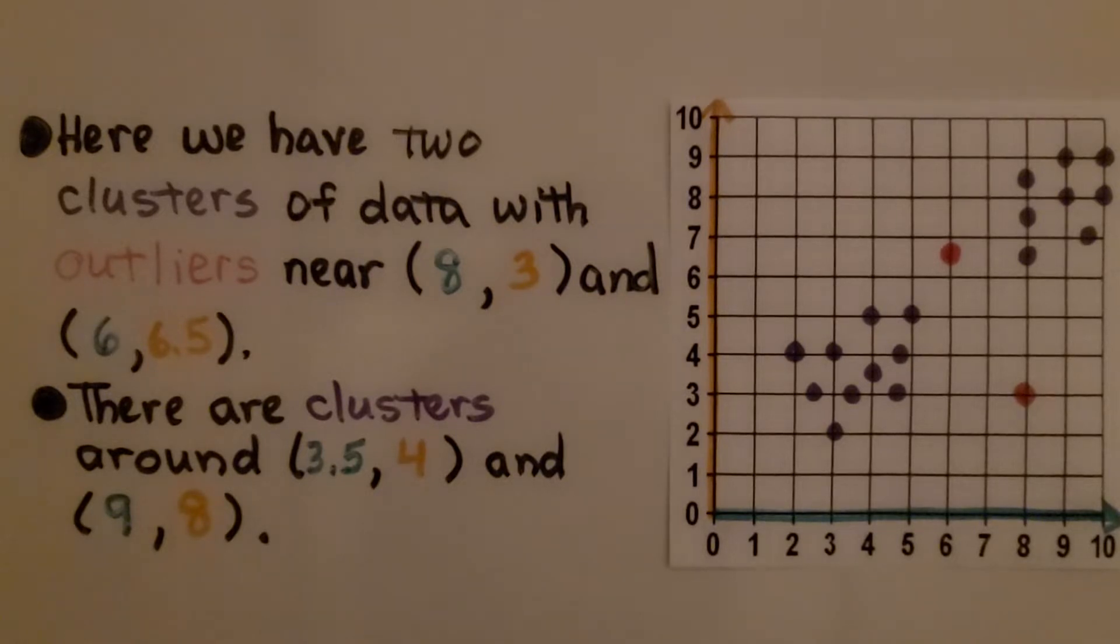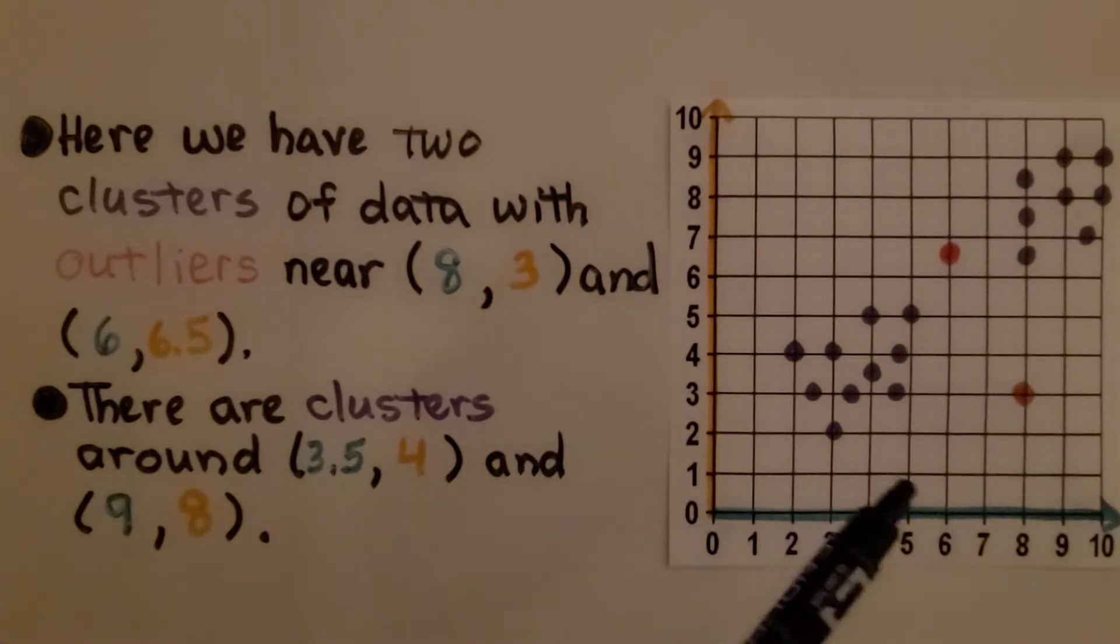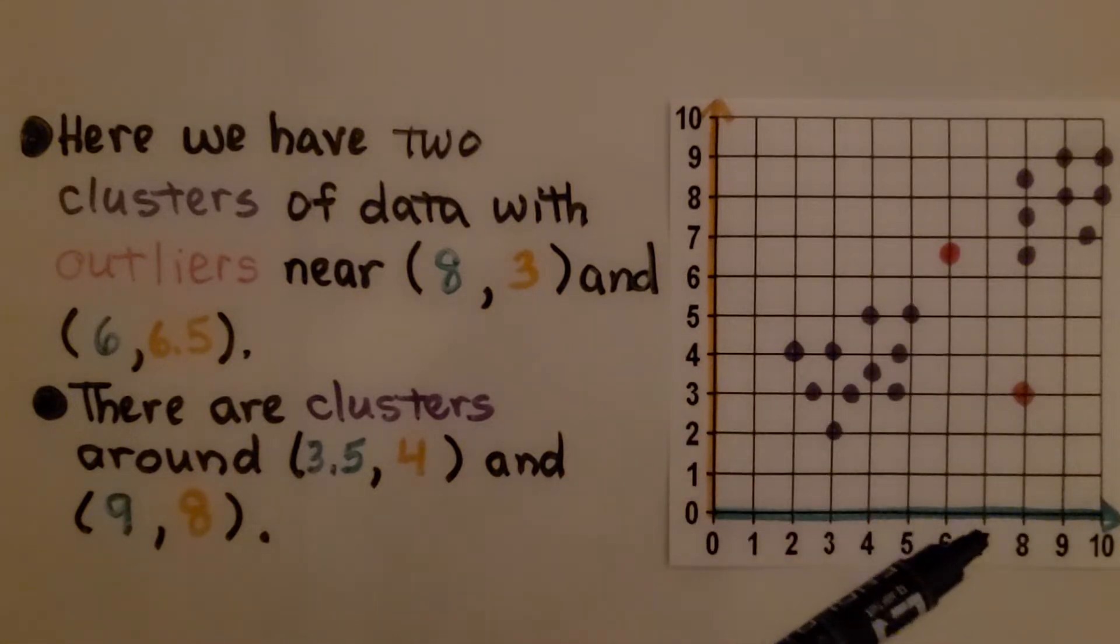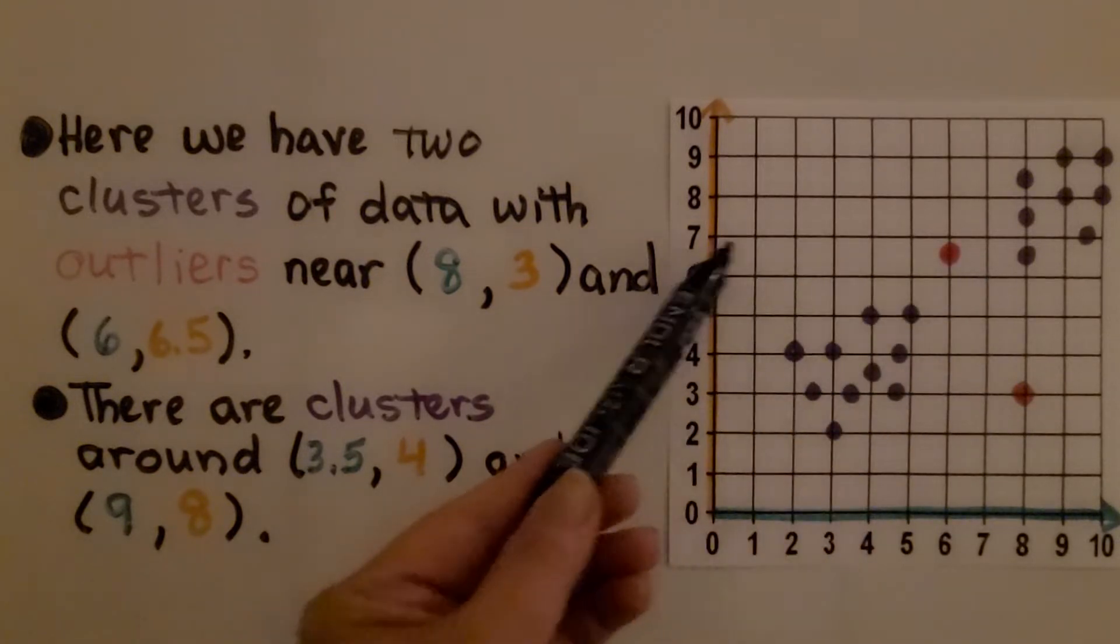Here we have two clusters of data with outliers, so there's more than one outlier. We have one near 8, 3, and one near 6, 6½.